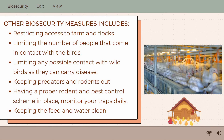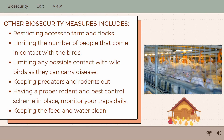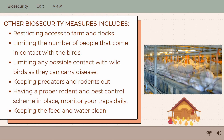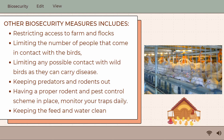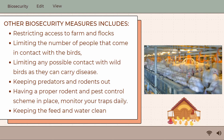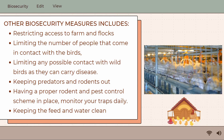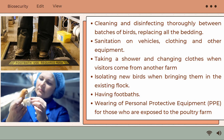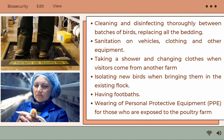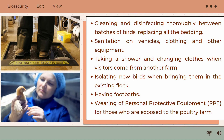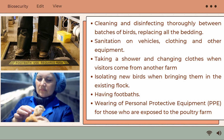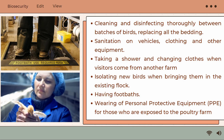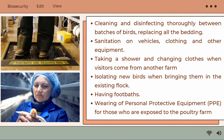There are other biosecurity measures, and these include: restricting access to farm and flocks; limiting the number of people that come in contact with the birds; limiting any possible contact with wild birds as they can carry disease; keeping predators and rodents out; having a proper rodent and pest control scheme in place; monitoring traps daily; keeping the feed and water clean; cleaning and disinfecting thoroughly between batches of birds; sanitation on vehicles, clothing, and other equipment; taking a shower and changing clothes when visitors come from another farm; isolating new birds when bringing them into the existing flock; having foot baths; and wearing personal protective equipment (PPE) for those who are exposed to the poultry farm.